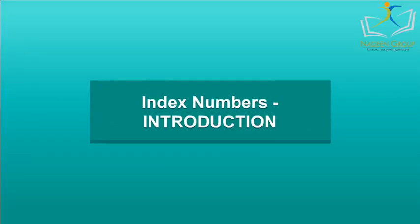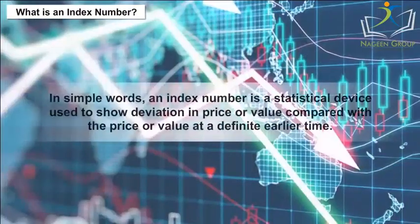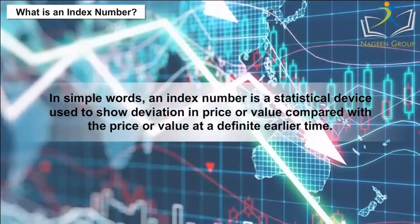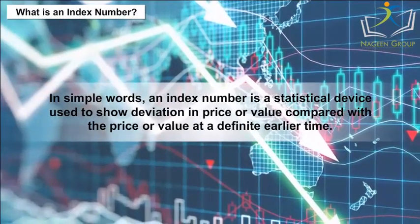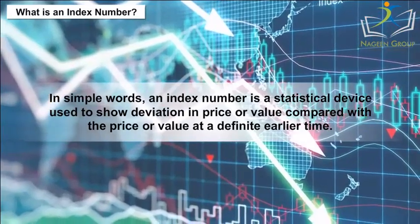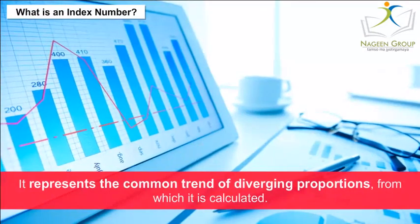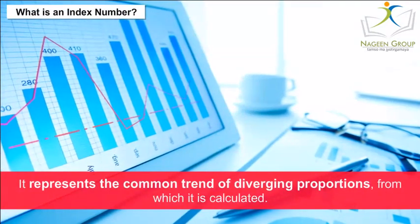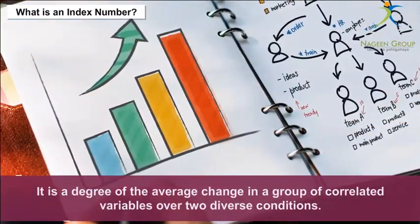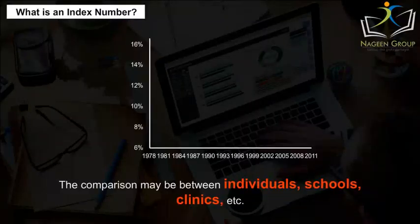Index Numbers — Introduction: What is an index number? In simple words, an index number is a statistical device used to show deviation in price or value compared with the price or value at a definite earlier time. It represents the common trend of diverging proportions from which it is calculated. It is a degree of the average change in a group of correlated variables over two diverse conditions.